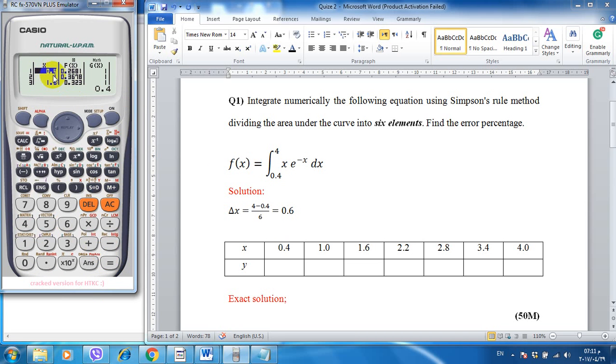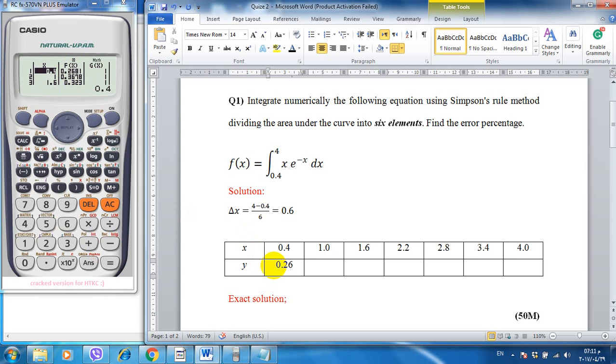Equal to this value. So at 0.4 we have 0.2681, this is the value 0.2681. Well at the number one, you can find at one 0.3678. At 1.6, 0.323.